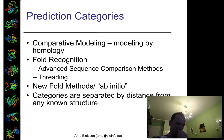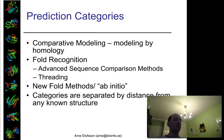Normally CASP evaluates in three categories: comparative modeling, fold recognition, and new fold or ab initio methods. However, these methods have merged together, so the boundaries are not equally clear any longer.